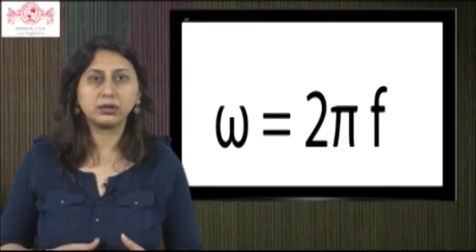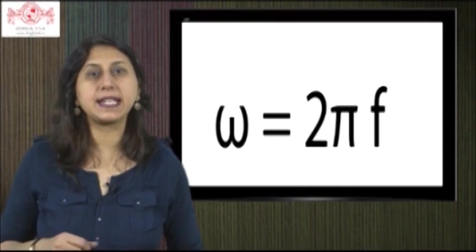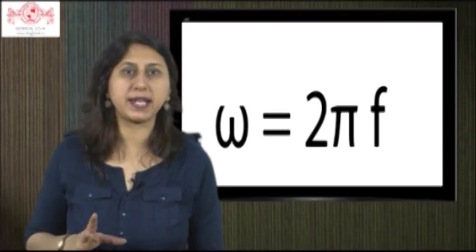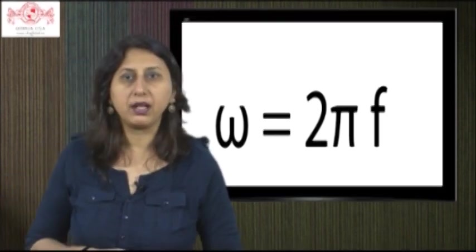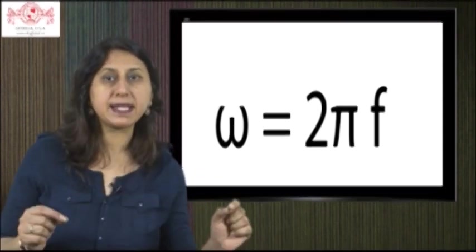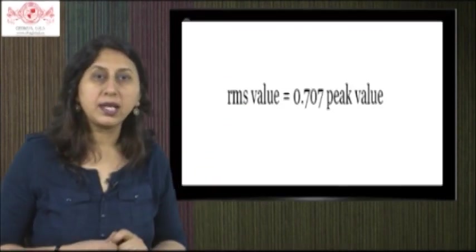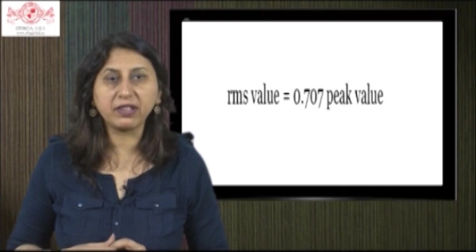RMS voltages and currents for AC circuits are generally expressed as RMS values. For a sine wave, the relationship between the peak and the RMS average is: RMS value = 0.707 × peak value.